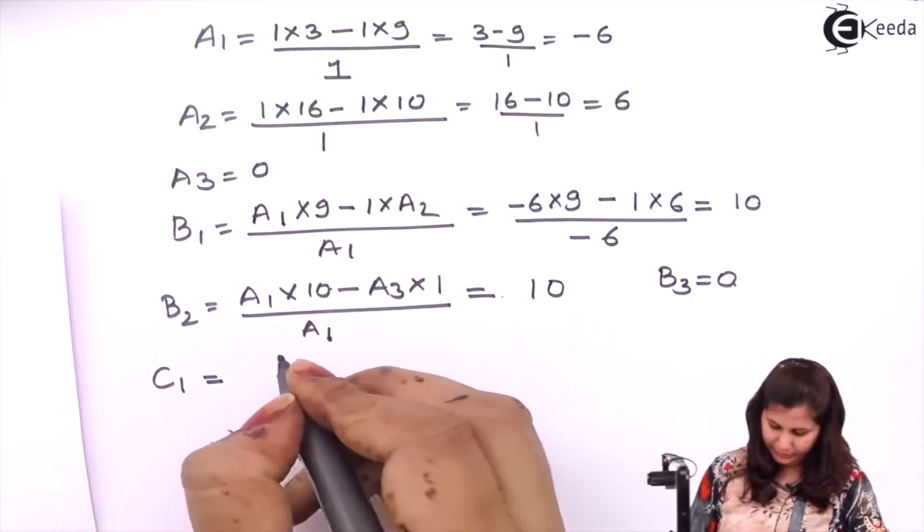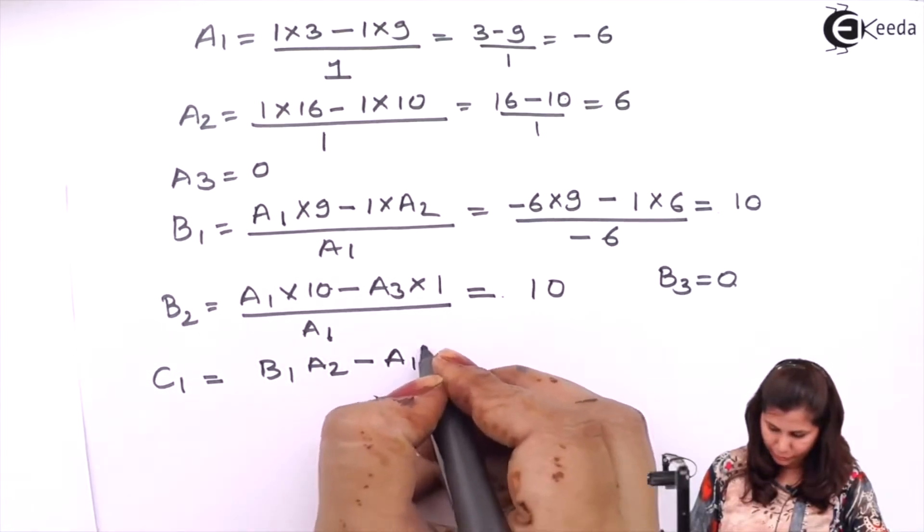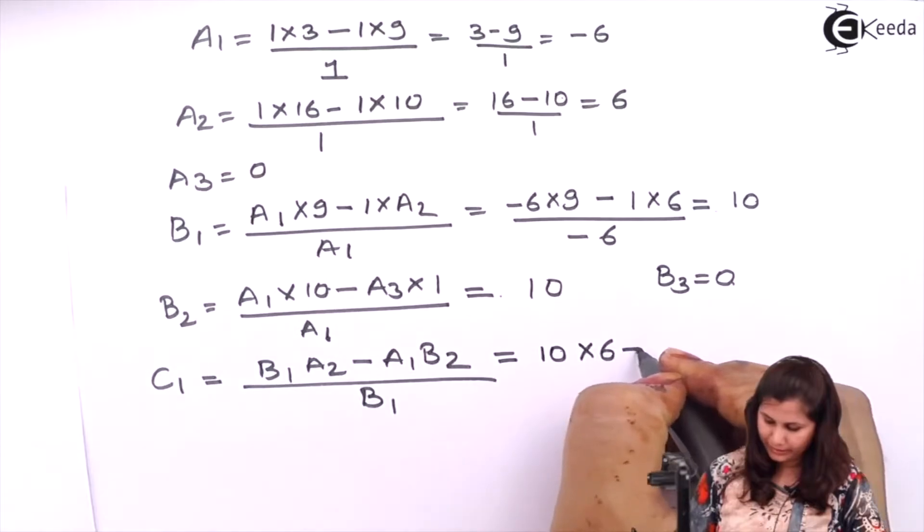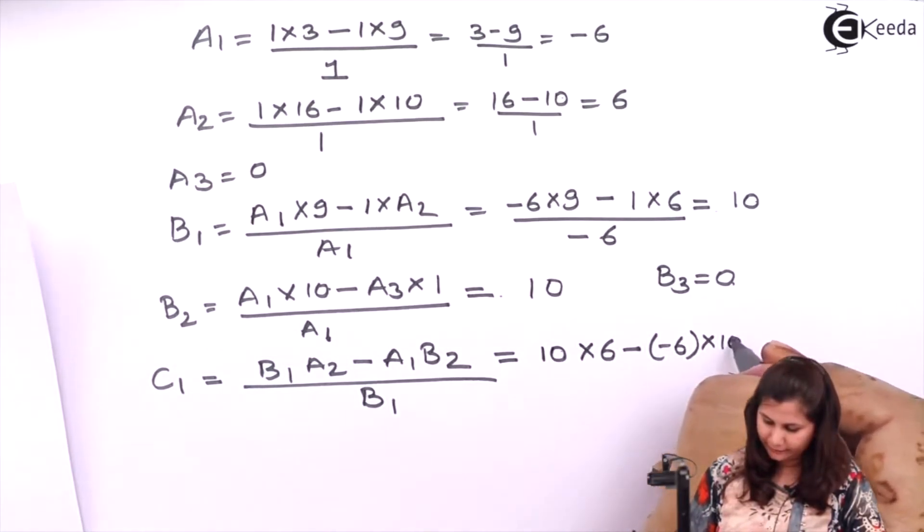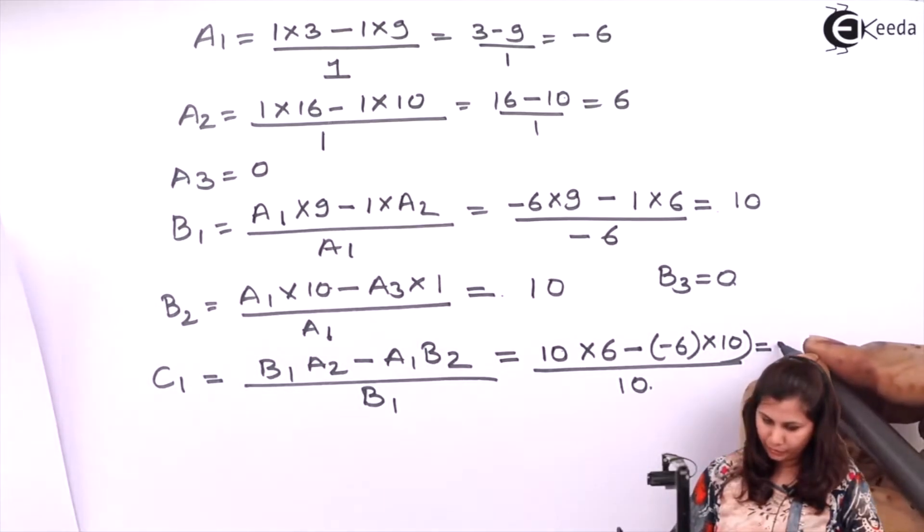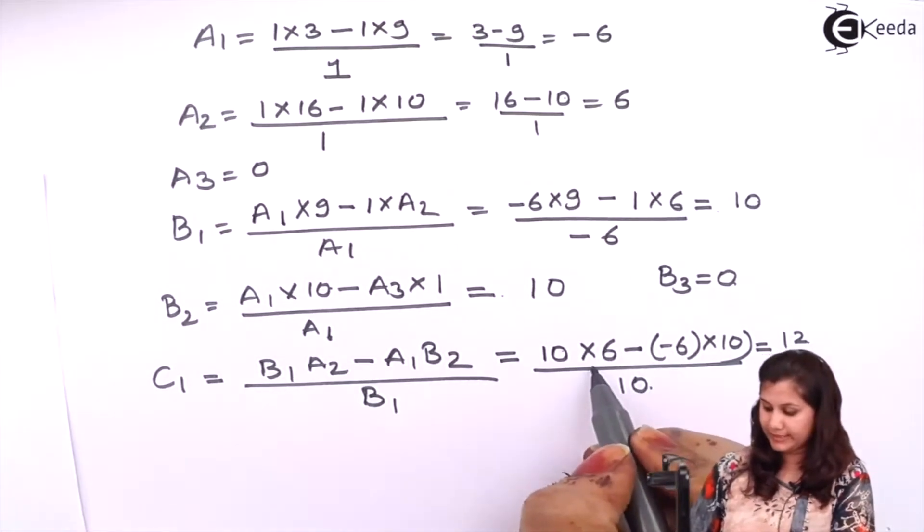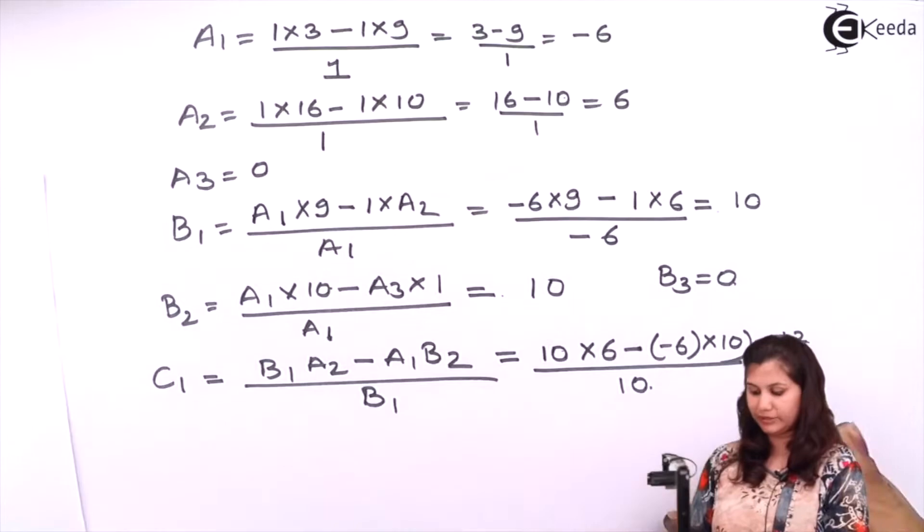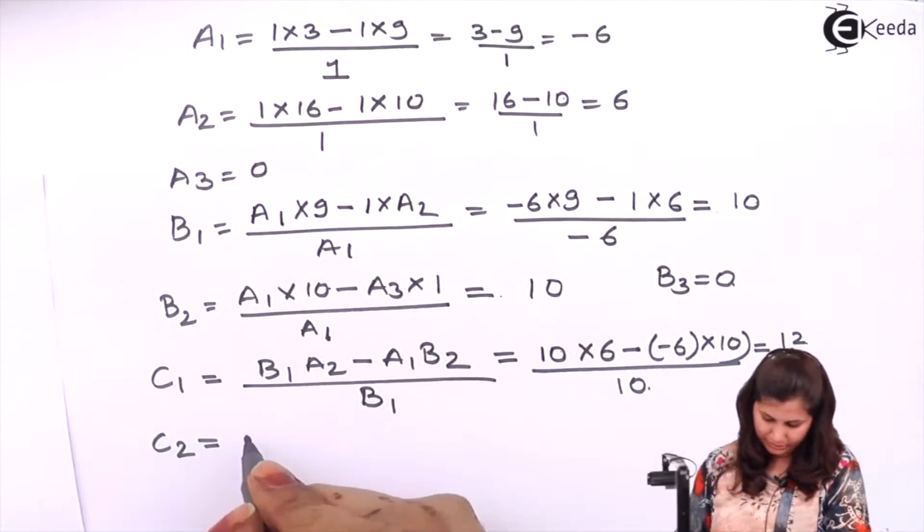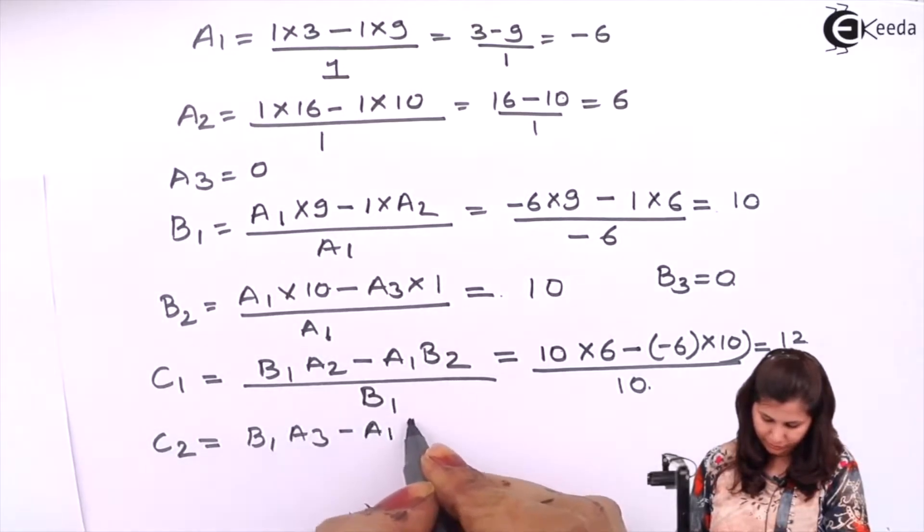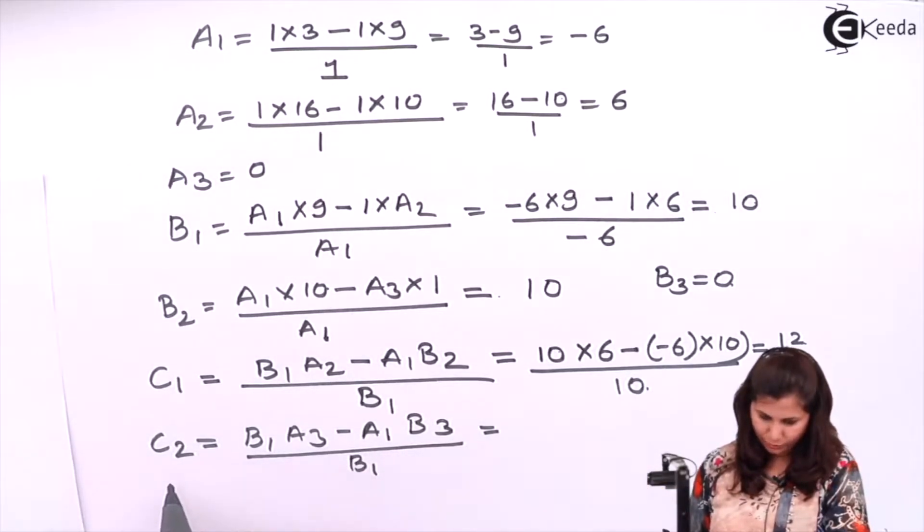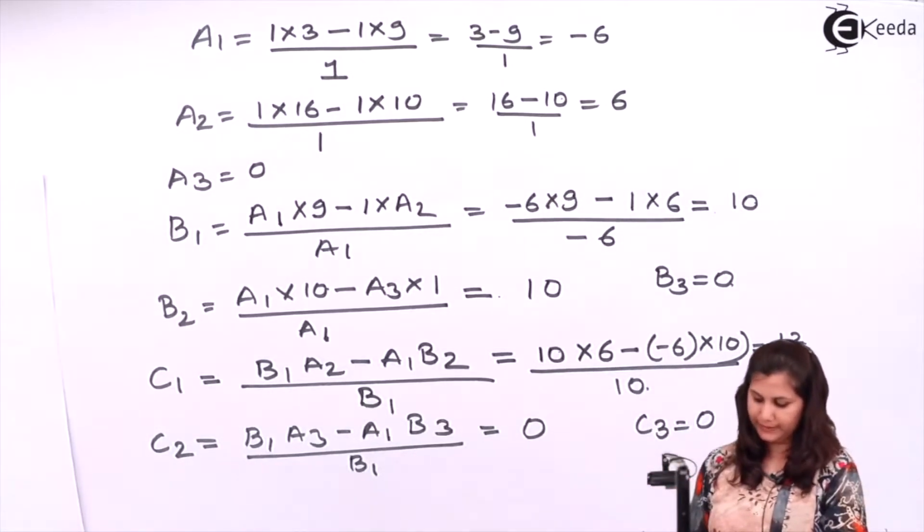Now c1, c1 will be b1*a2 minus a1*b2 upon b1. Put the values of all the variables: b1 is 10, a2 is 6, minus a1 is minus 6 and b2 is 10 upon b1 is 10. So when you solve this, you will get the value as 12, because 60 plus 60 it will be 120, 120 by 10, so it will be 12. So c2 will be b1*a3 minus a1*b3 upon b1. Put the value of all the variables, you will get c2 as 0. c3 will also be equals to 0.